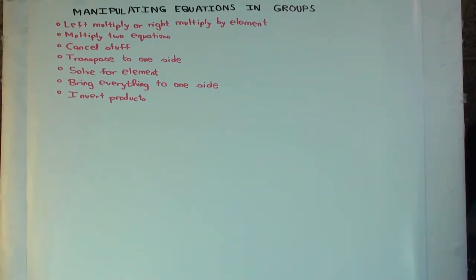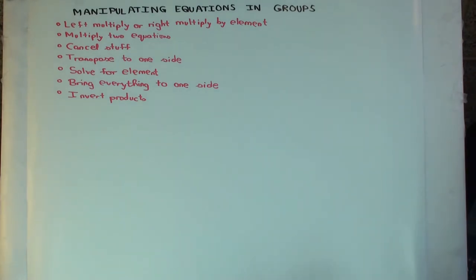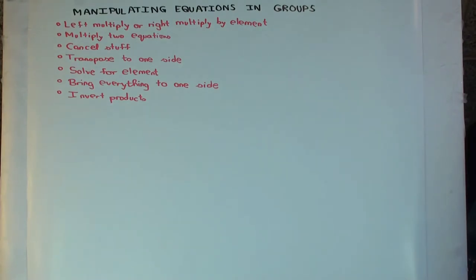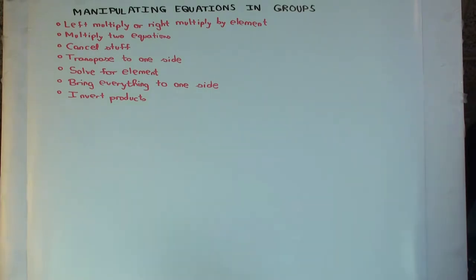In this talk, I'm going to describe various techniques for manipulating equations in groups. What I mean is that I have a group and some equation involving elements of the group using the operations of the group, and I want to figure out what kind of algebra I can do — just like you learned algebra in school or college where you multiply things on both sides. Which of those operations make sense in groups?